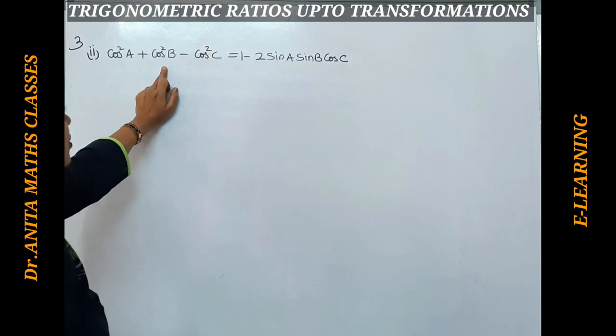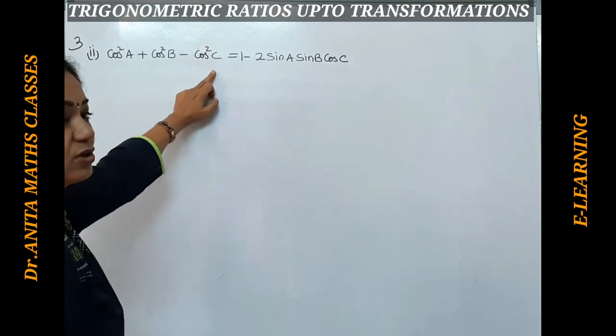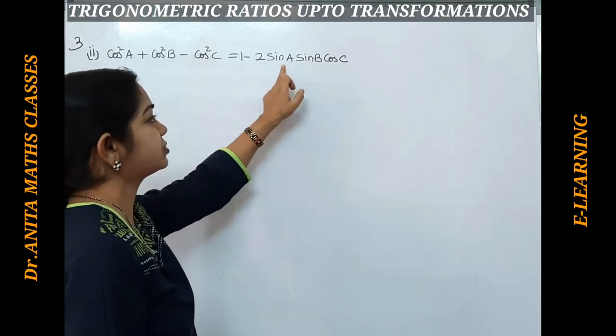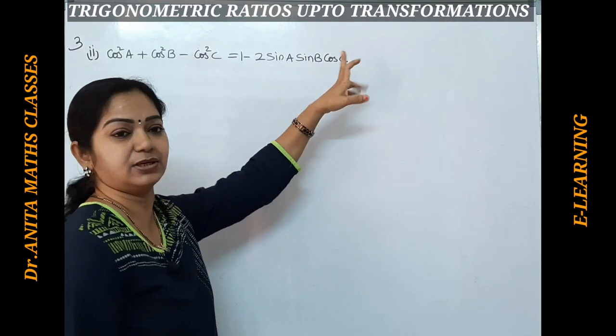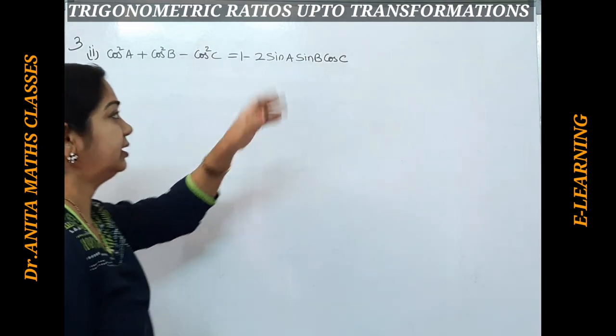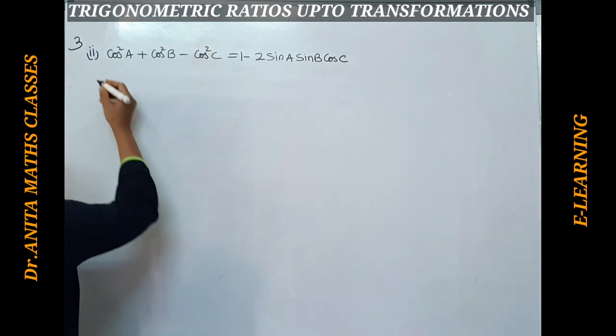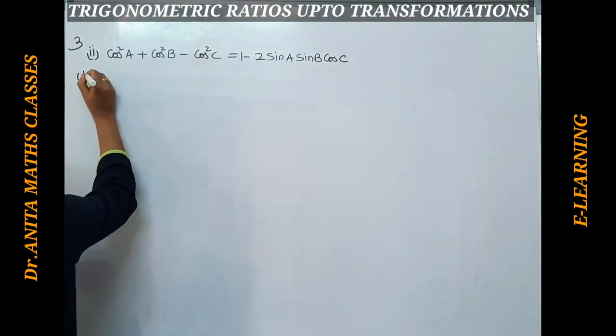The next problem: prove that cos²a + cos²b - cos²c = 1 - 2 sinA sinB cosC. We will start with the LHS.